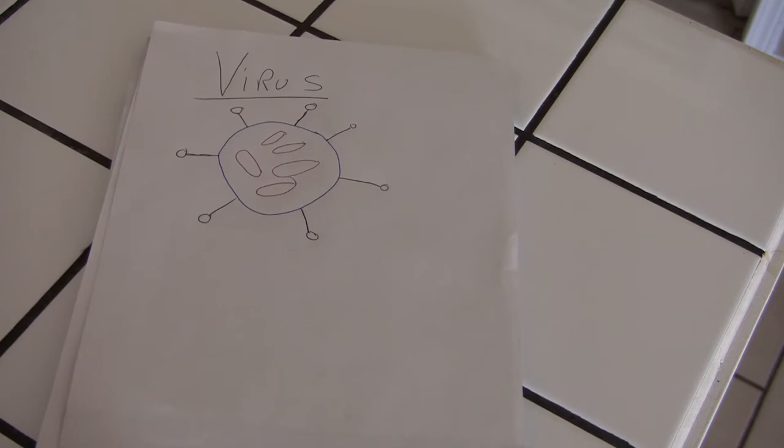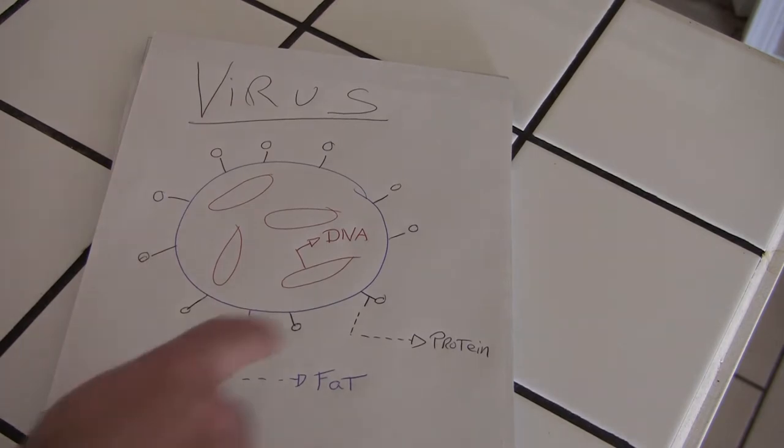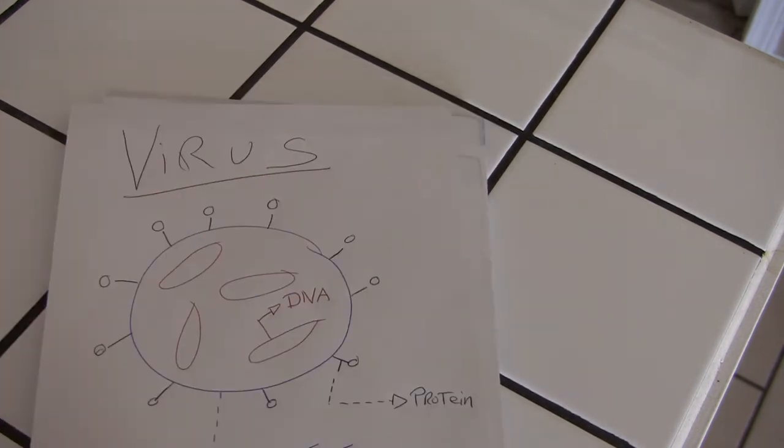So let's start by explaining what is a virus. This is a virus. It's basically made of a DNA, a protein, and a fat, a layer of fat. It's so simple that its only goal is to get inside a cell to reproduce, to ensure its existence, just like the cells that we can find in our body.